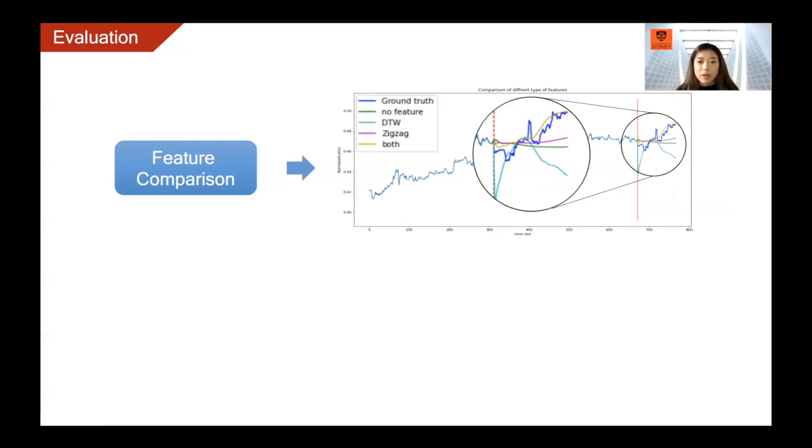When using the zigzag feature, the curve tends to align to the ground truth, but is not oscillating enough to fit it. Zigzag feature provides enough information about the trend, and the similarity feature provides extra information about the oscillation. The model can provide a better prediction to fit the ground truth better.